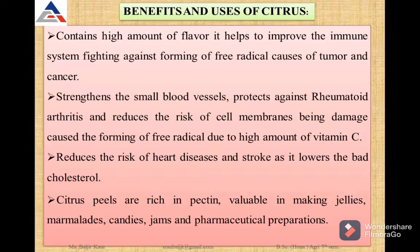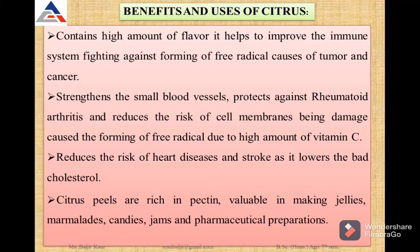Citrus fruits have different benefits and uses. Citrus fruit contains a high amount of flavonoids. It helps to improve the immune system, fighting against the formation of free radicals that cause tumors and cancer. It strengthens the small blood vessels, protects against rheumatoid arthritis, and reduces the risk of cell membrane damage due to high vitamin C content. It also reduces the risk of heart diseases and stroke by lowering bad cholesterol. Citrus peels are rich in pectin, used for jelly making, marmalade, candies, jams, and pharmaceutical preparations.